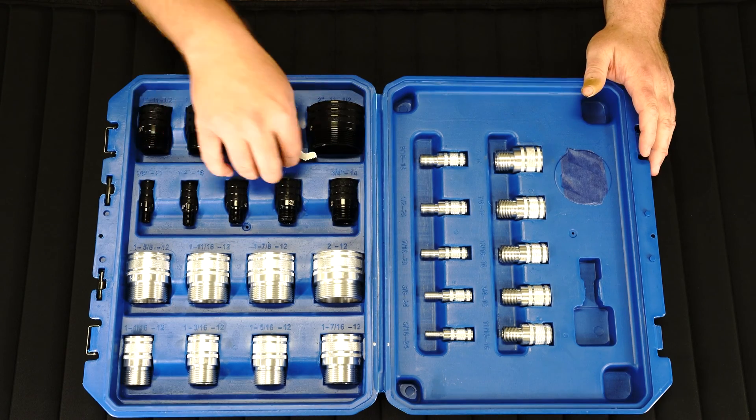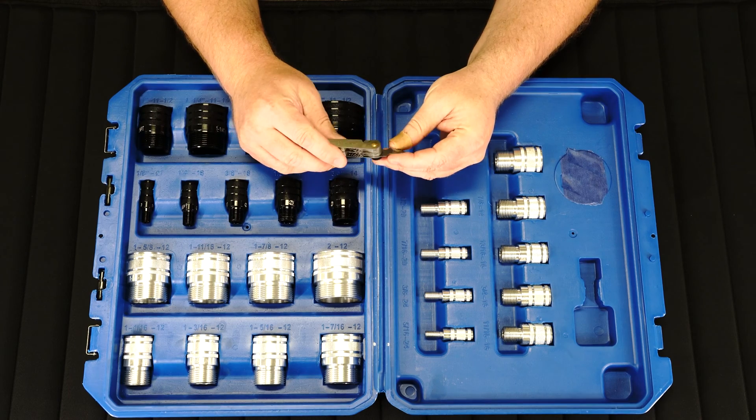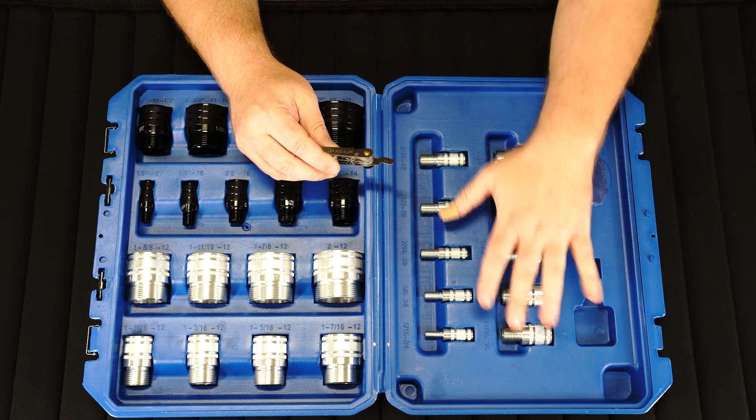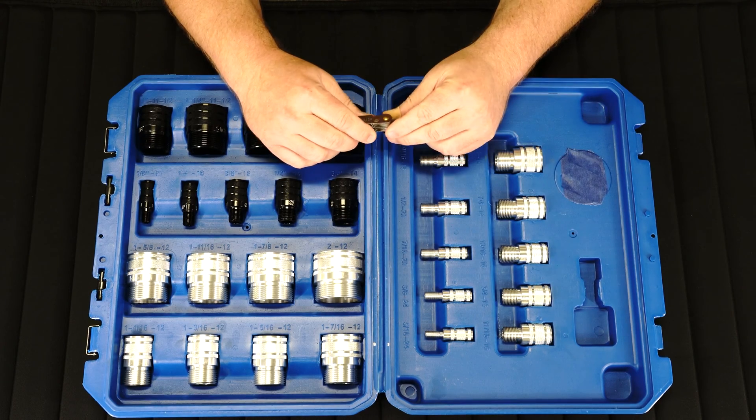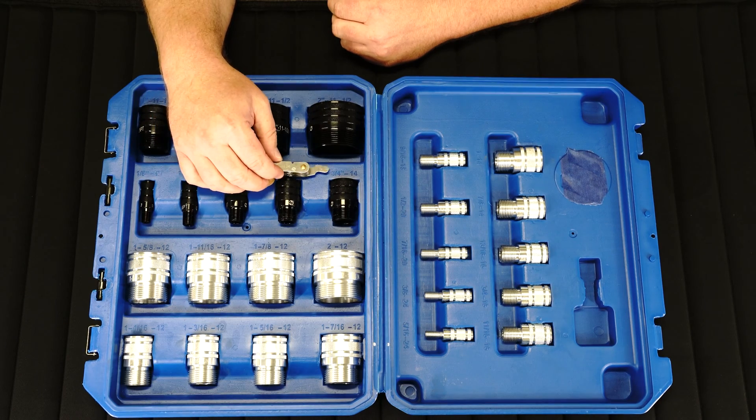They also provide you with a thread gauge kit. This will help you identify how many threads per inch you have for each thread in this kit. It's another good tool to use to be able to identify and make sure that you're selecting the proper threads.